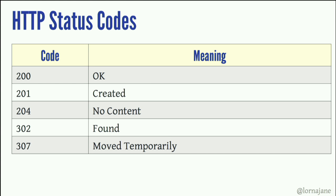You might also get 307, which is 'moved temporarily.' You can do this in the middle of a site migration when URLs are temporarily pointed to a different endpoint but that's not going to be their eventual home. Use 307 and the search engines won't update their references — they'll keep using the original URL. This is quite helpful if you're in the middle of a migration.